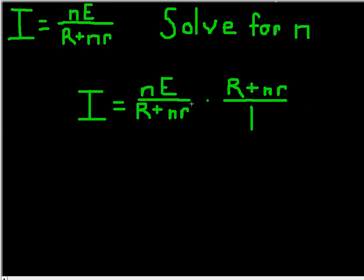And so when we do that, we have to do it on both sides. So I'd have to multiply this side also by R plus nR.